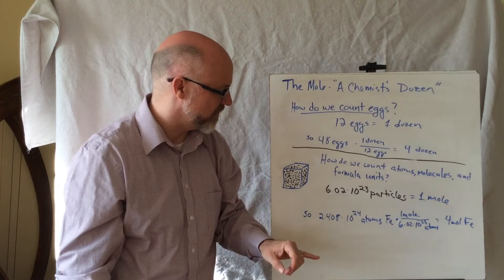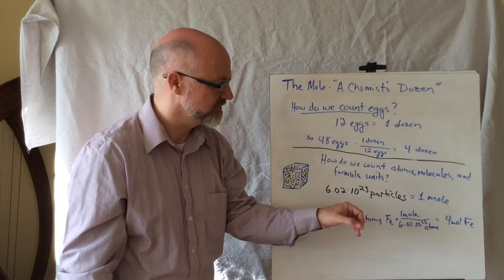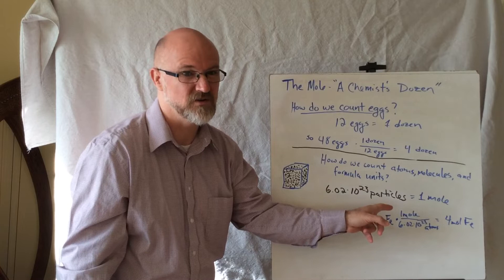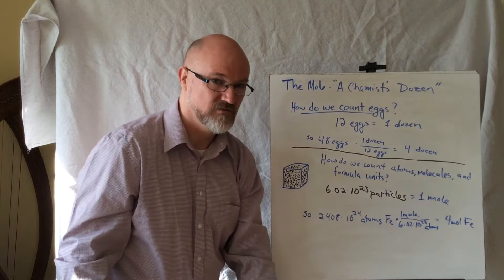So if I had 2.408×10²⁴ atoms of iron, doing the same math - that one might not be so easy to do in your head, that's why we're going to use calculators - it comes out to be 4 moles of iron.